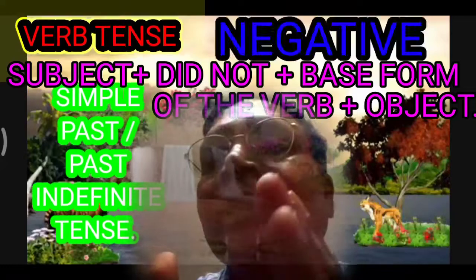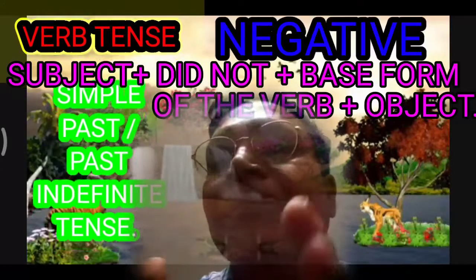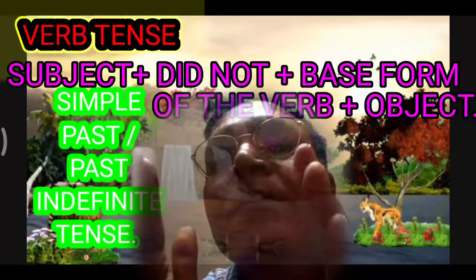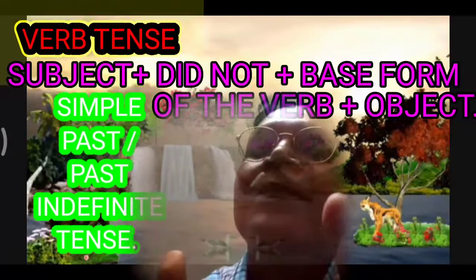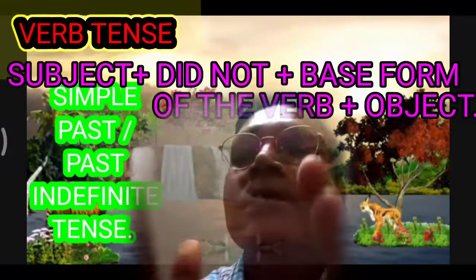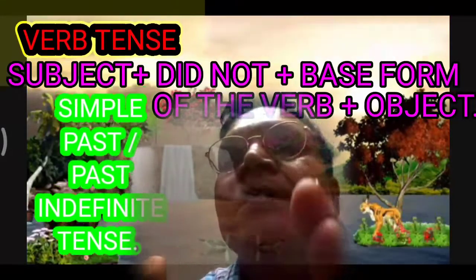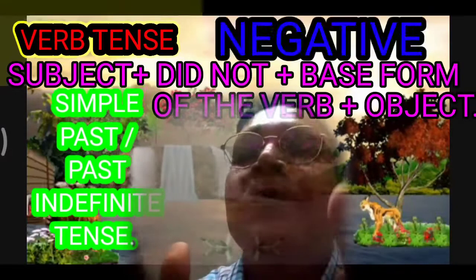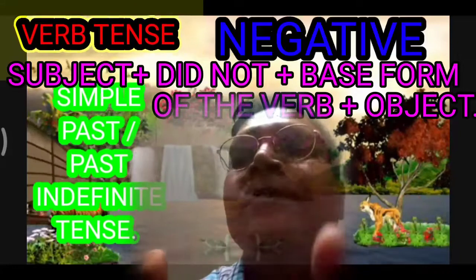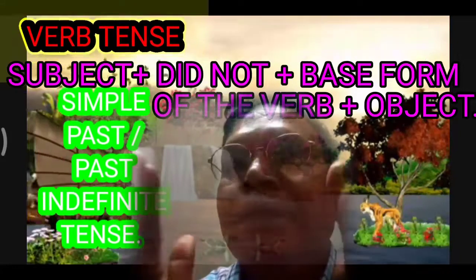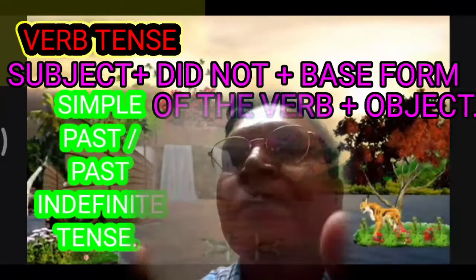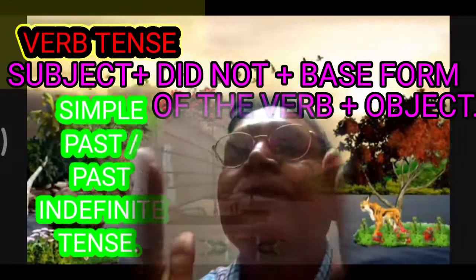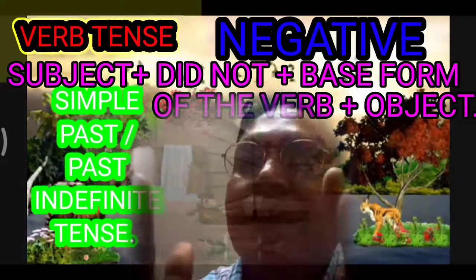The negative case of simple past or past indefinite tense. In this case, we will have a root formula: subject plus did not plus first form of the verb plus object.